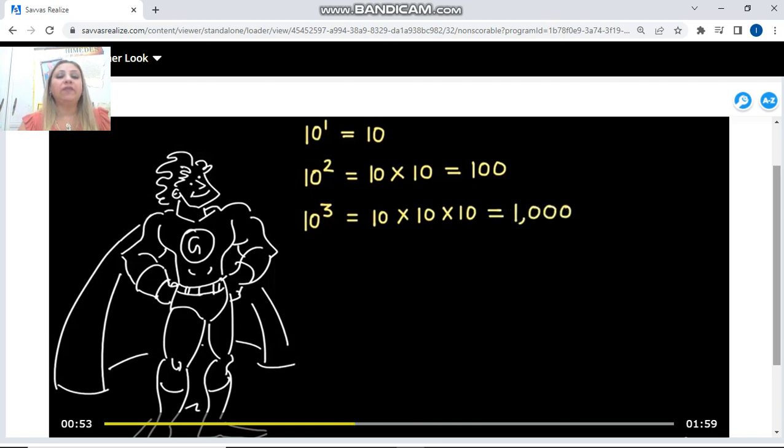What if I want to multiply 10 by itself four times? What does that mean? It is 10 to the fourth power. I am multiplying 10 by itself four times, and this is equal to 10,000.